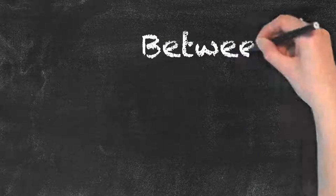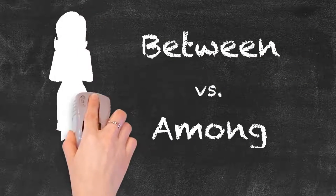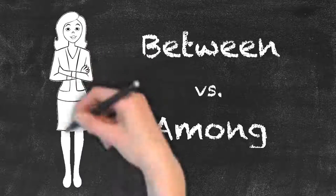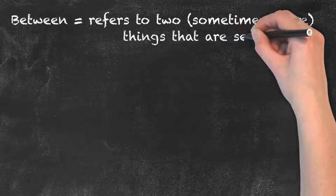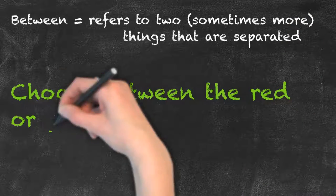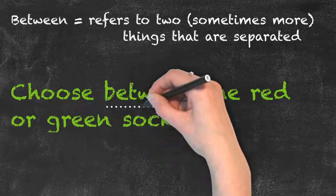Between versus among: the difference between the two words 'between' and 'among' is often unclear to many, so let's break it down. Between is used to refer to usually two, sometimes more, things that are clearly separated.